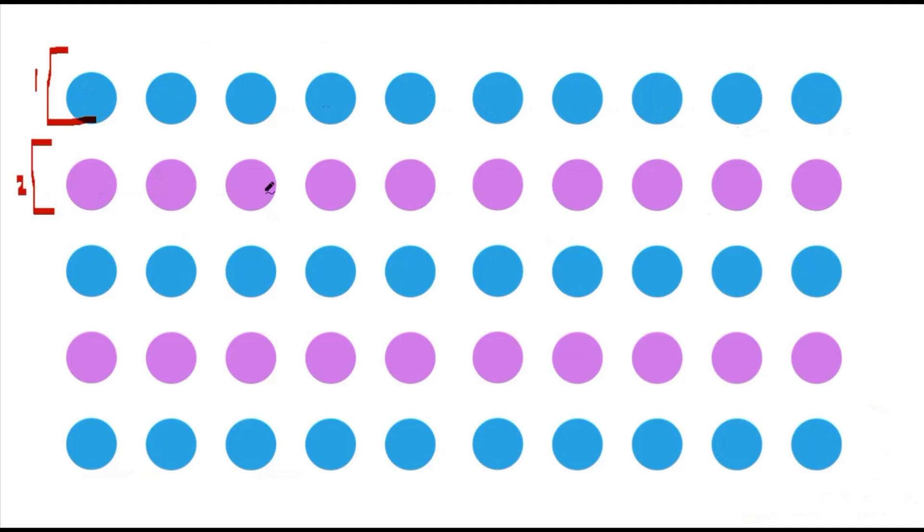Second group: 1, 2, 3, 4, 5, 6, 7, 8, 9, 10. Third group. Fourth group. Fifth group: 1, 2, 3, 4, 5, 6, 7, 8, 9, 10. That means that 10 goes into 50 five times. Five groups of 10 make 50.